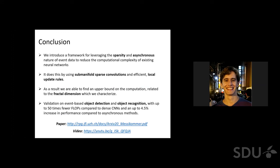In conclusion, we introduce a framework that leverages the sparse and asynchronous nature of event data to reduce the computational complexity of existing neural networks. It does this by using sparse convolutions and efficient asynchronous update rules. As a result, we are able to find an upper bound on the computation related to the fractal dimension which we characterize. We validate it on the task of object detection and object recognition where we find an up to 50 times reduction in number of FLOPs compared to dense CNNs and an up to 4.5 percent increase in performance compared to asynchronous methods.